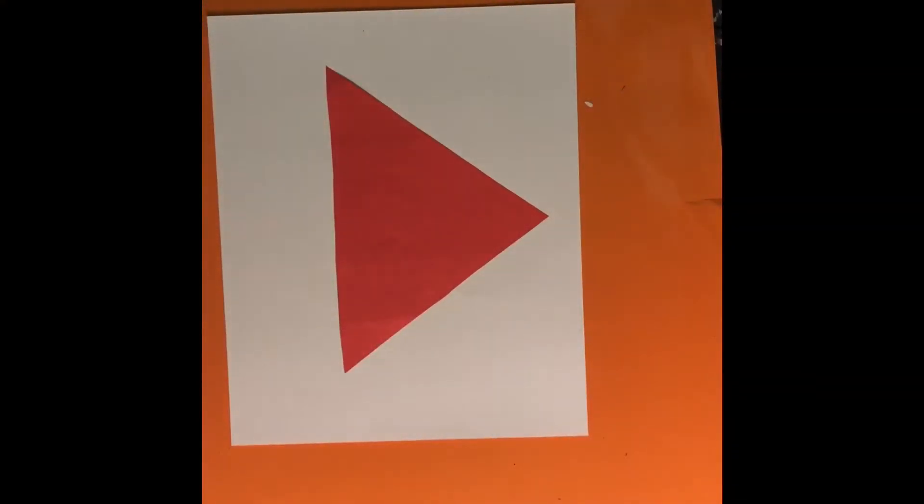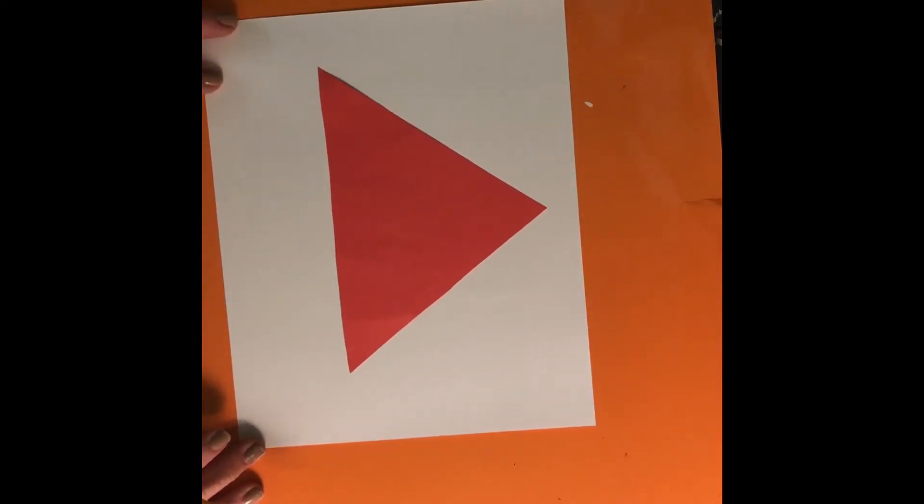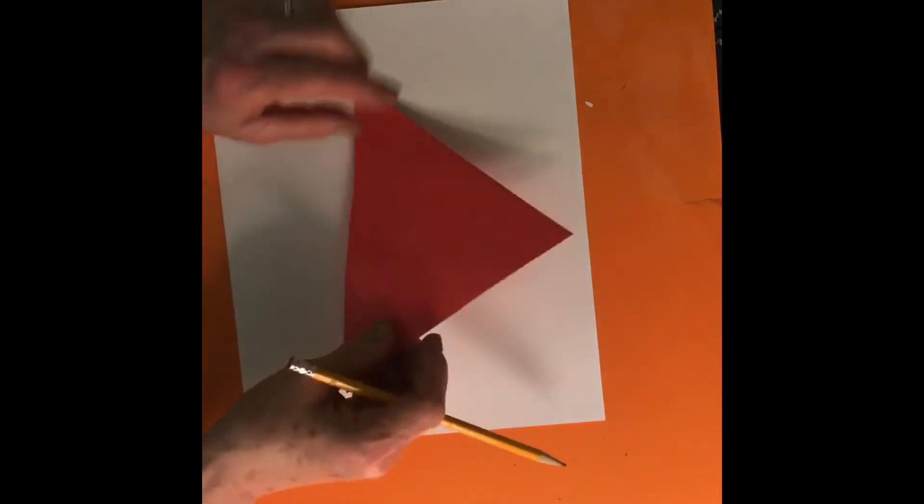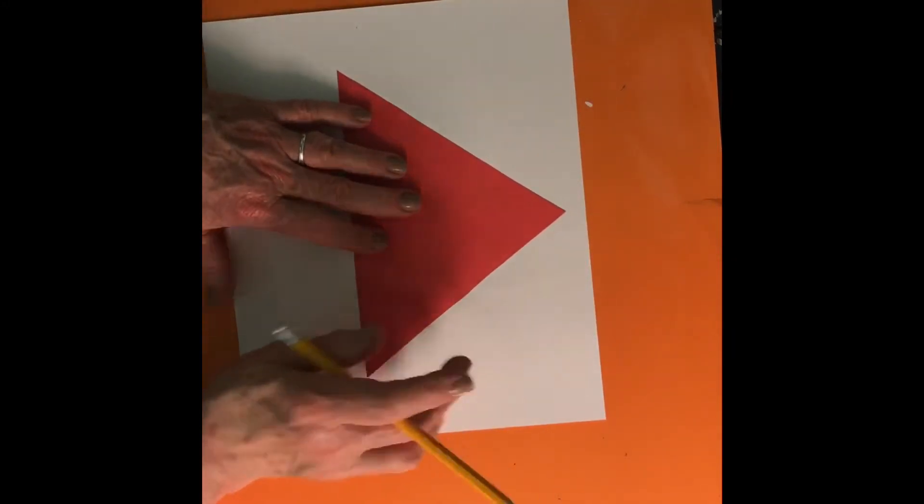Let's begin exploring color by making a color wheel, or in this case, a color star. I took a piece of white paper, and I made myself a triangle, and I'm going to trace.